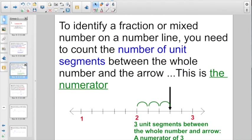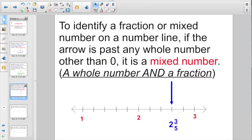To identify a fraction or mixed number on a number line, you need to count the number of unit segments between the whole number and the arrow. This is going to be your numerator. So again, if the whole number on the left is 2, start at the whole number, count the unit segments up to the arrow. 3 unit segments, that would give you a numerator of 3.